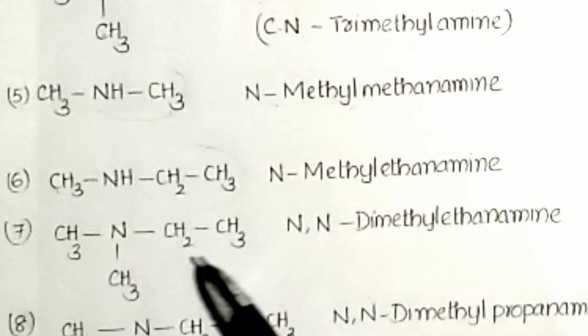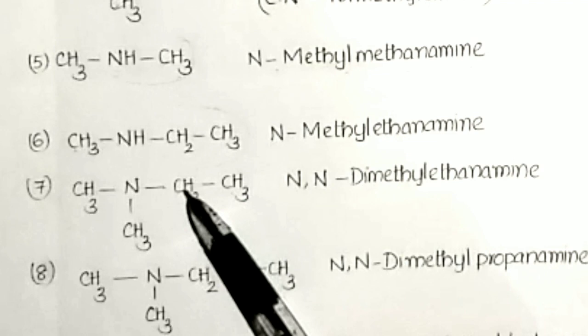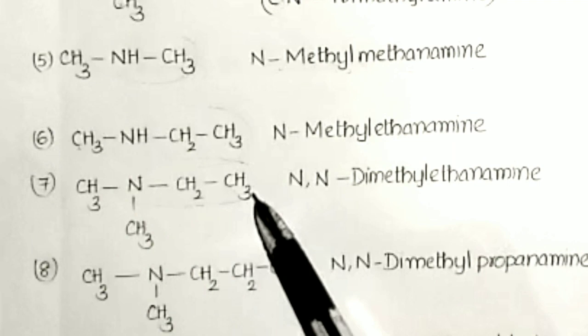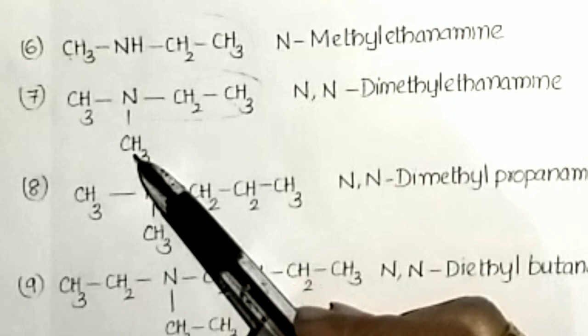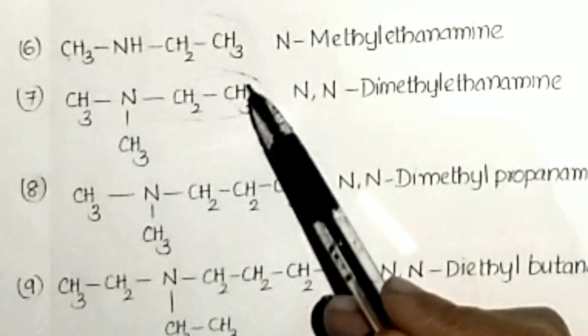For the compound where nitrogen has one methyl group, one methyl group, and one ethyl group: the longest continuous carbon chain containing nitrogen is the ethyl group, taken as parent — ethanamine. The two methyl groups become substituents, giving N,N-dimethyl ethanamine.